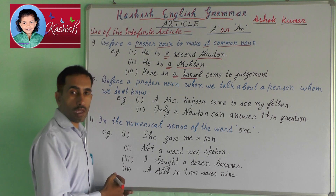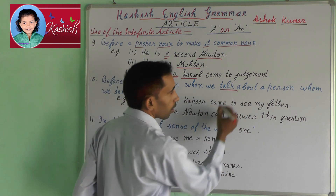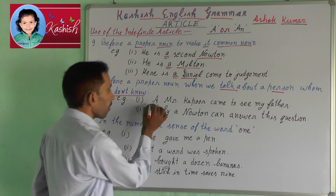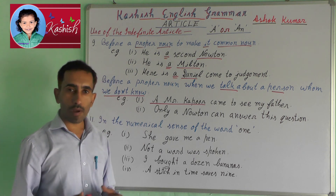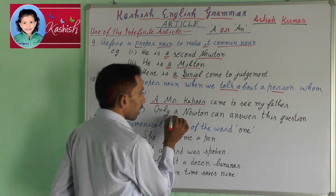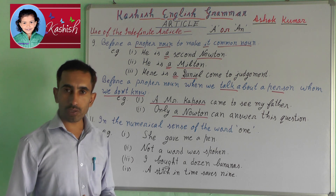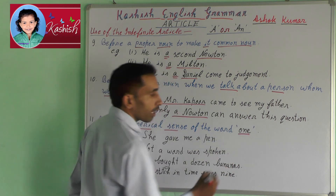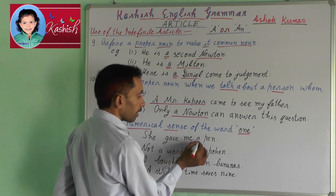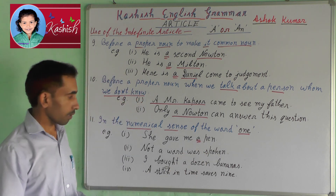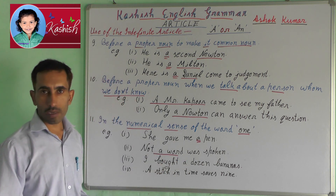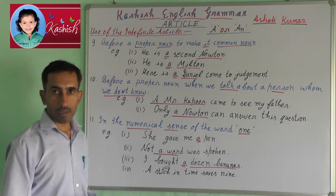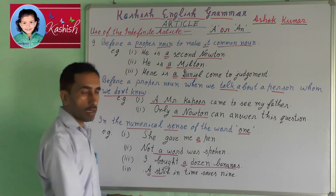Tenth, before a proper noun when we talk about a person whom we don't know. For example: a Mr. Kapoor came to see my father. Only a Newton can answer this question. Eleventh, in the numerical sense of the word 'one'. For example: she gave me a pen; not a word was spoken; I bought a dozen bananas; a stitch in time saves nine.